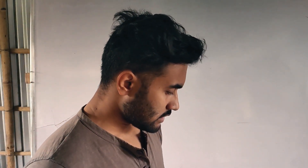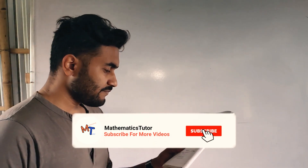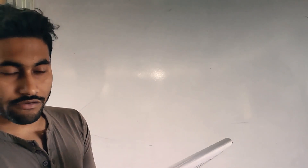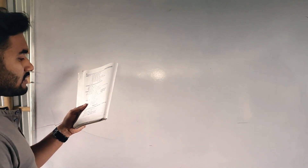Good morning everyone. We were discussing sets in the last video — Exercise 2.4, question number 1. We completed part (c), so today let us start with question number (d): prove that A minus B equals A if and only if A intersection B equals phi. This is another if-and-only-if proof.